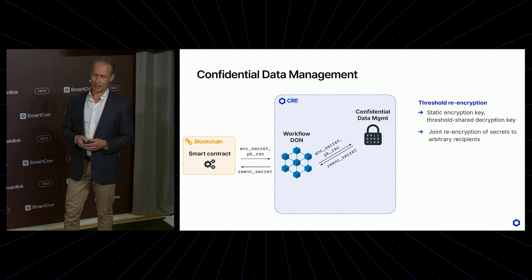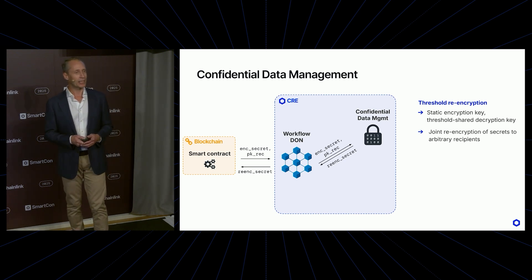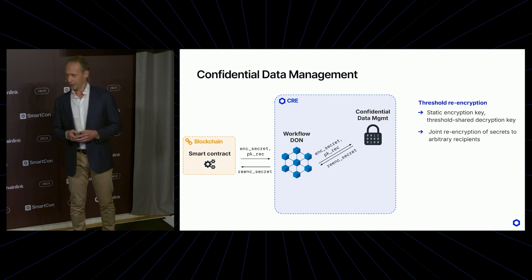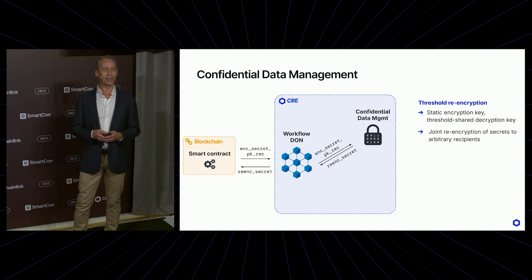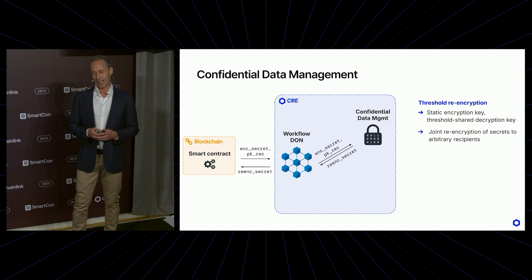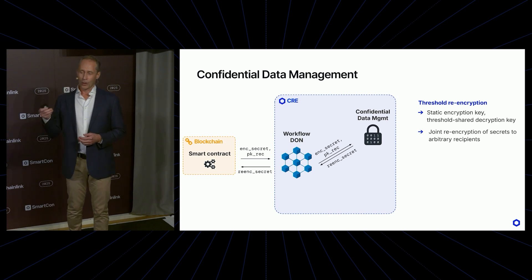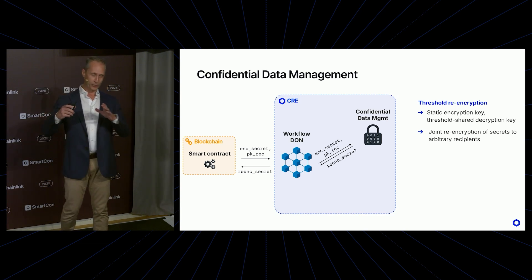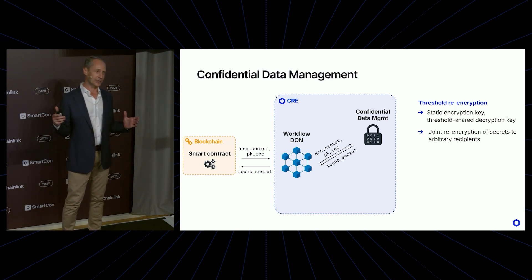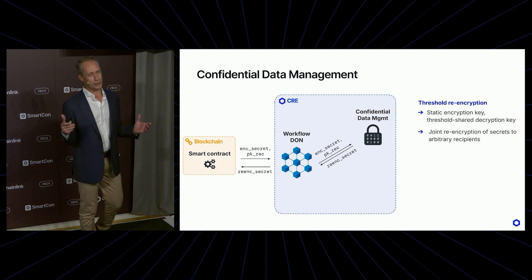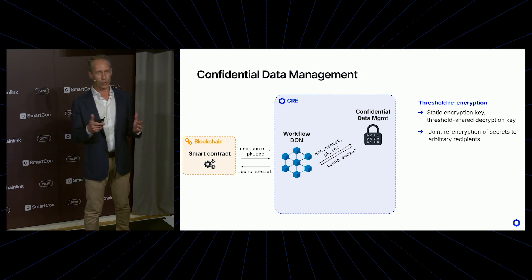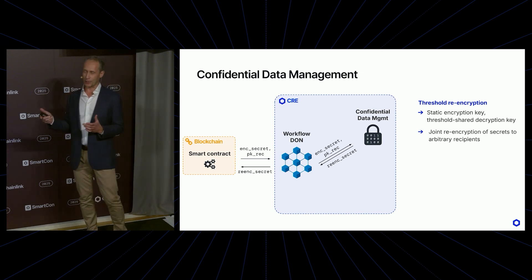Let's dive in a bit more detail. Chainlink Confidential Compute is adding two or three new capabilities to the CRE — I'm going to talk about two of them here. The first is Confidential Data Management, sometimes also referred to as the Valdon. What it does is let a network of nodes jointly generate a public encryption key, so that no single node knows the corresponding decryption key.